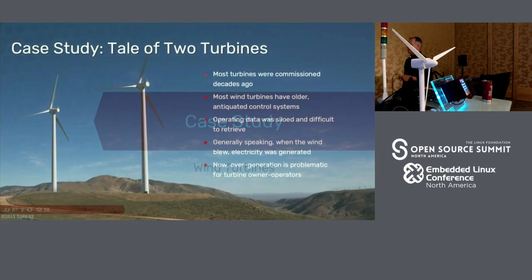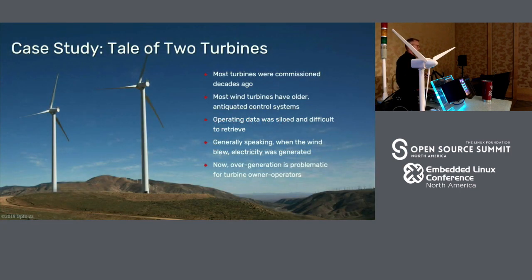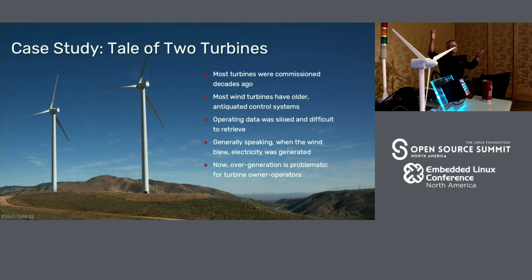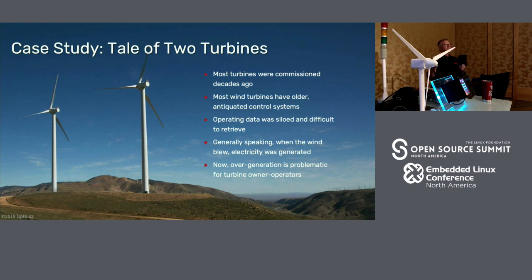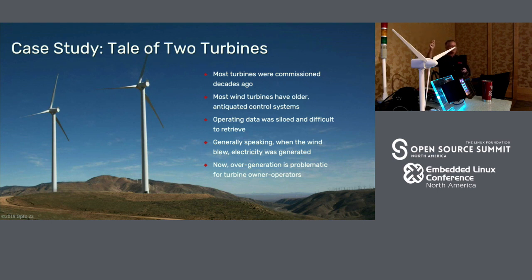Let's go to a case study — I call it the tale of two turbines, actually the tale of 2,000 turbines. If you've driven through Palm Springs or up in the Bay Area, you've seen hills full of these turbines. They've been out there for a long time, created to take wind energy and convert it to electrical energy. There's a control system that makes sure the turbine operates properly. If the wind blew, you put energy on the grid. People own and operate these towers for one reason: they get paid to put that energy on the grid, and you get paid whatever the price of electricity is.